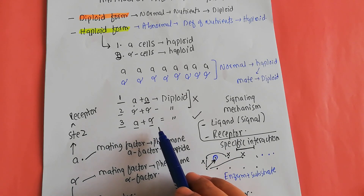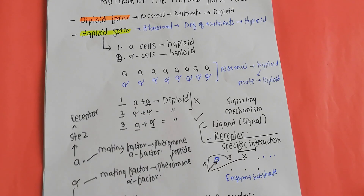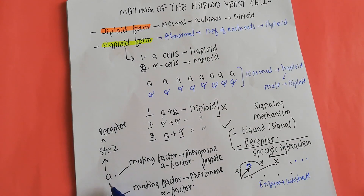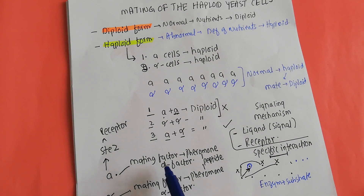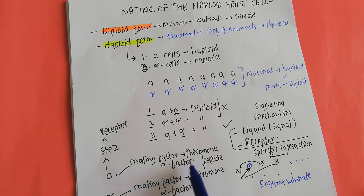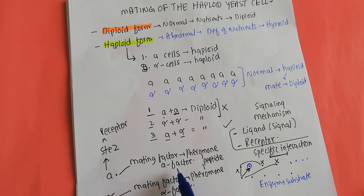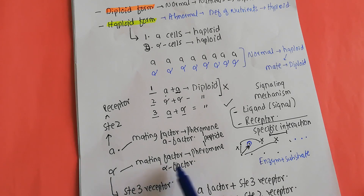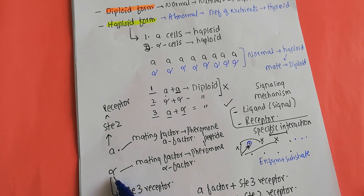The A cell produces a specific mating factor known as a pheromone, and the specific pheromone produced by the A cell is known as the a-factor. Similarly, the alpha cell produces a specific mating factor — also a pheromone — but the pheromone produced by the alpha cell is known as the alpha-factor.